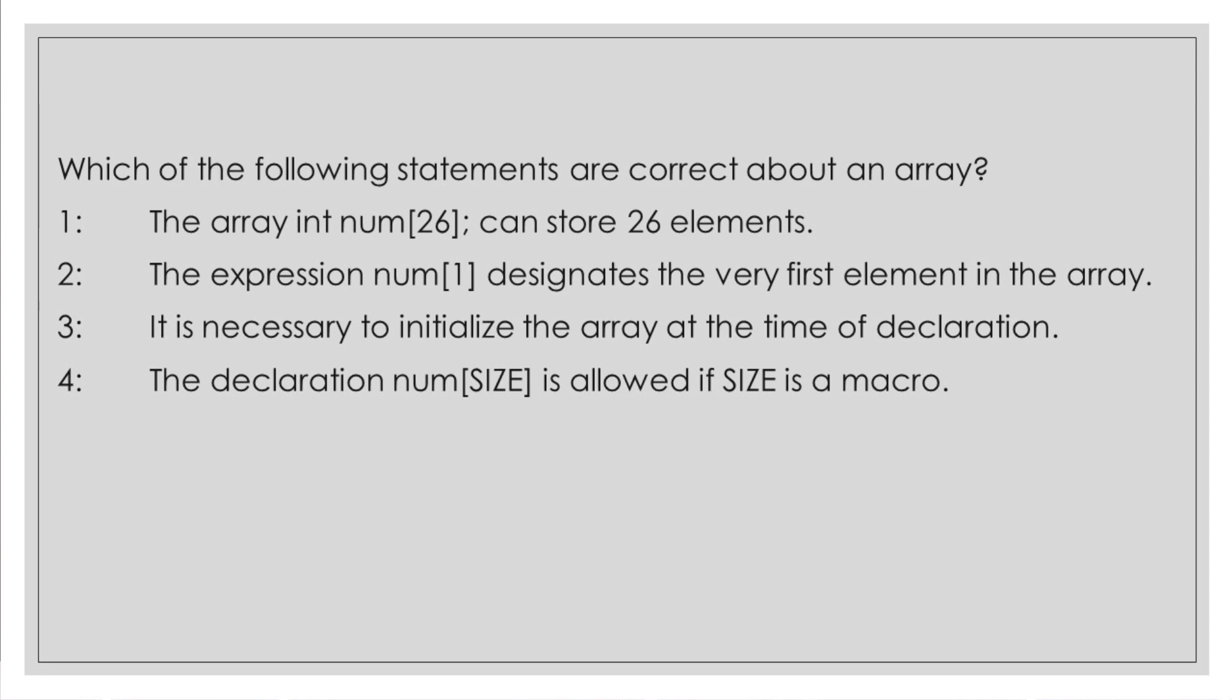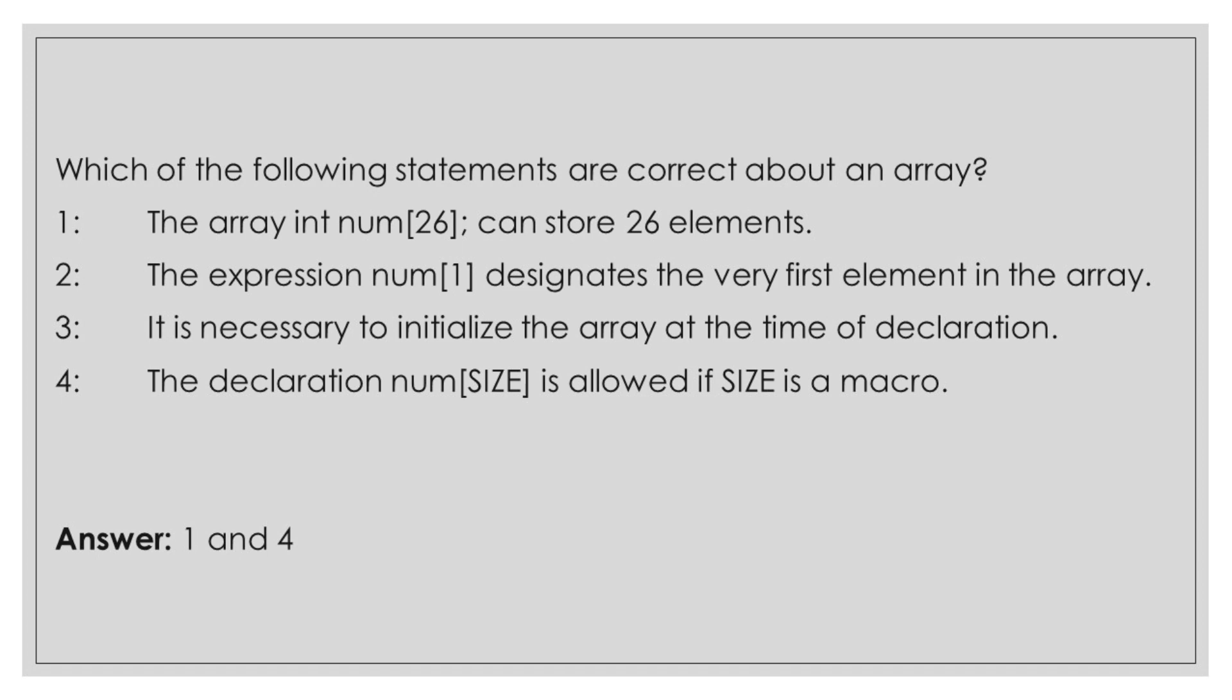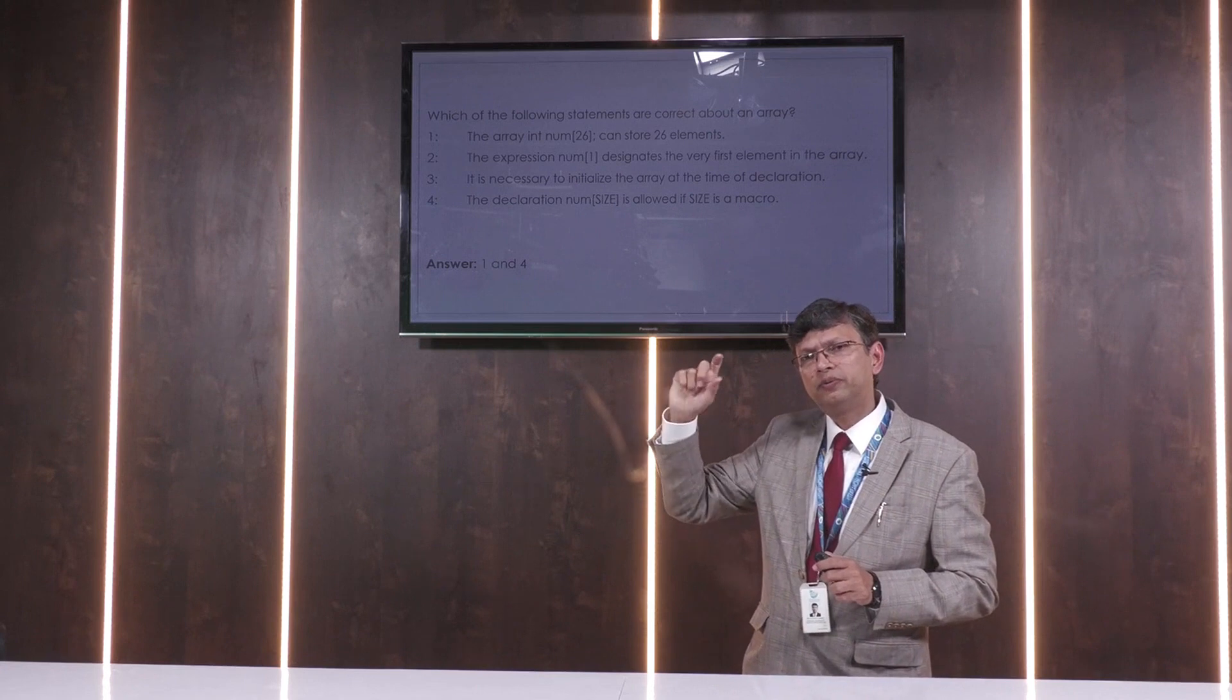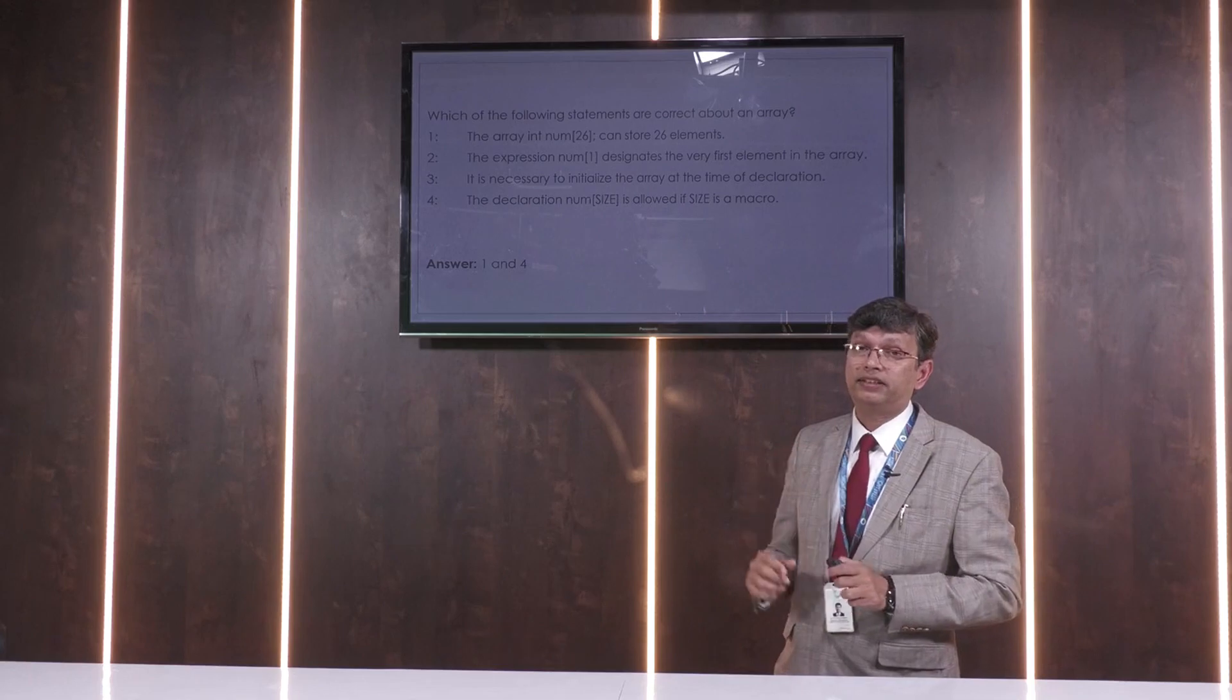If you want more time, pause the video and think for a while. Here is the answer: 1 and 4. The answer is 1 and 4. Why? Statement 1 is the array integer num[26], that means size is 26, so we can store 26 elements from 0 to n-1 which is 0 to 25. And statement 4, we can see the declaration num[size] is allowed if size is a macro. Even if the size is a macro, you can define it before the main function, we can still have it.